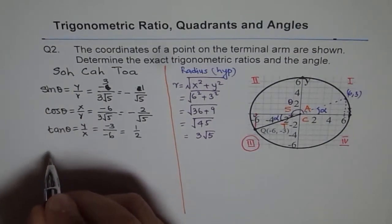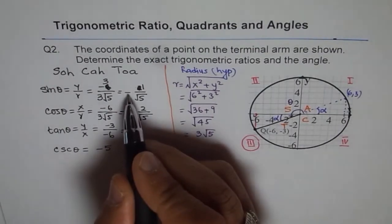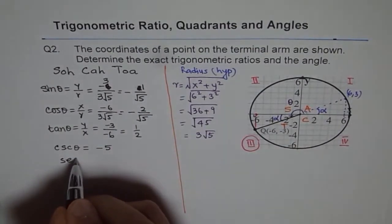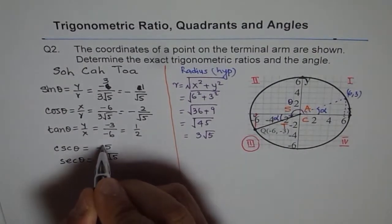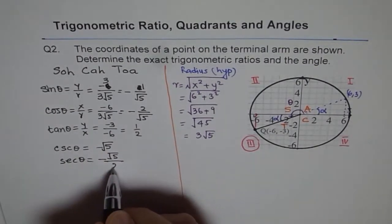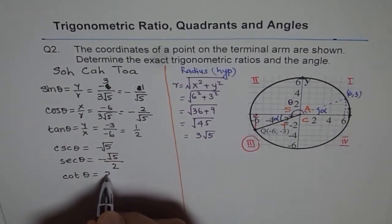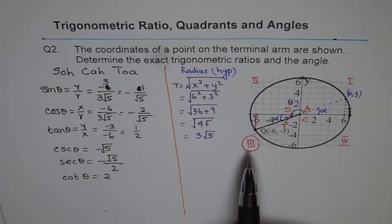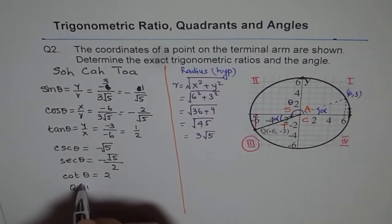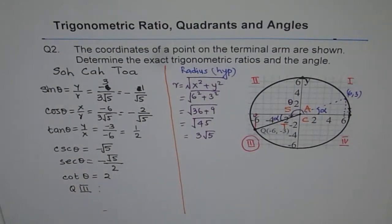Sin theta reciprocal is cosecant theta. So cosecant theta is reciprocal, so it is just minus square root 5. The sign will remain minus. And for cos, it is secant theta. Secant theta is reciprocal of cos. So you get minus square root 5 over 2 with a negative sign. Now, tan theta reciprocal is cotangent theta. And that is reciprocal of tan. So you get 2. So these are your secondary trigonometric ratios. These are primary trigonometric ratios. In all we have 6 of them. So you got all our values. The check here is we are in quadrant 3. So in quadrant 3, only value positive should be tan and its reciprocal cotangent. Perfect. And others are negative. That is good. So that is kind of a check. It always helps people like me to get the right answer.